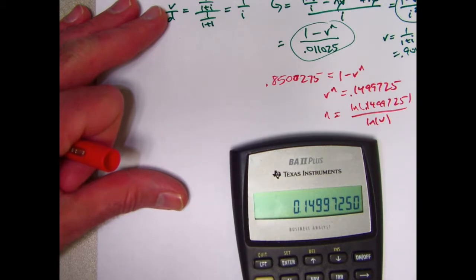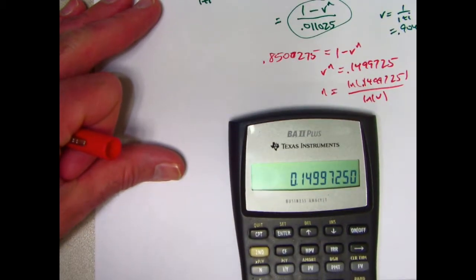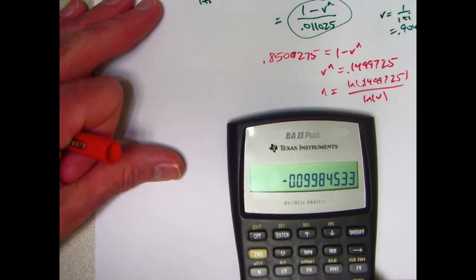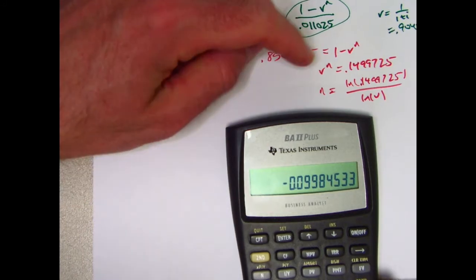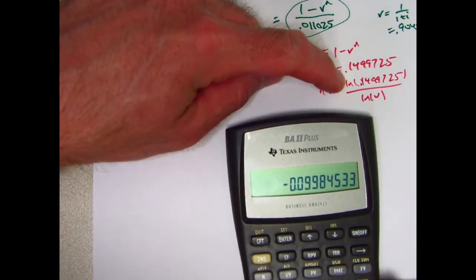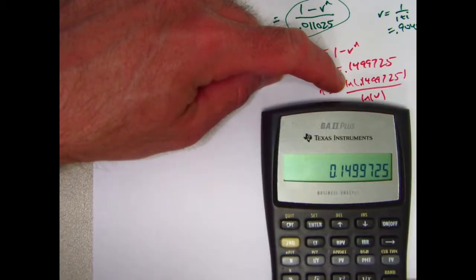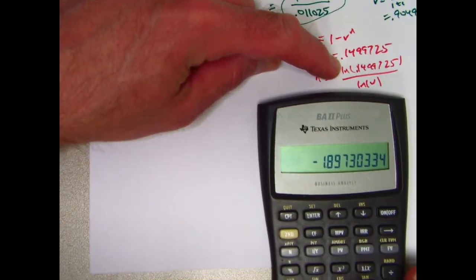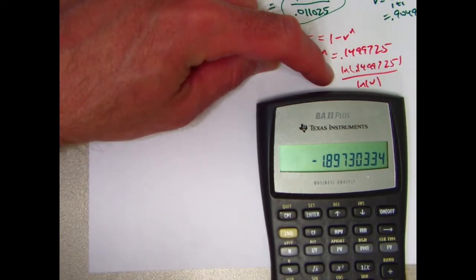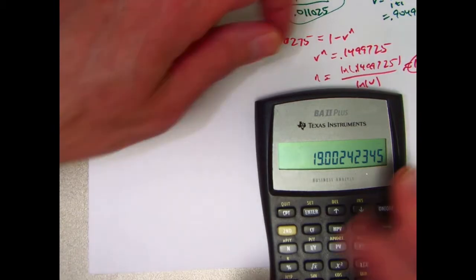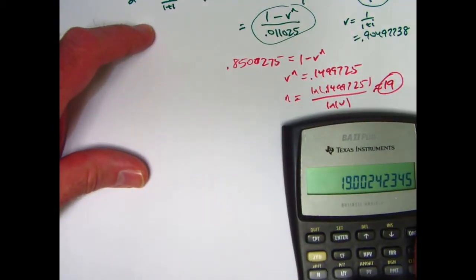All right. Let's find the natural log of V first. Recall 0. That's V. Take its natural log. You get a negative number, which you would if you take a log of a number between 0 and 1. I'll store that in register 1. It's okay. That'll be a negative number as well. 0.1499725. Take its natural log and get this. Divide by what was in register 1. And N is approximately 19. And that is the correct answer. Approximately 19.